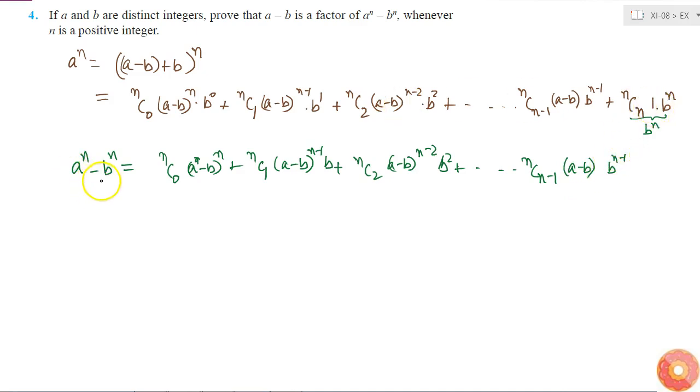Because I took this term to the left hand side, so I will be left with this. Here I can see that the power of (a-b) is going on decreasing from n up to 1. So all the terms will have power greater than 1, right?